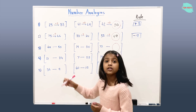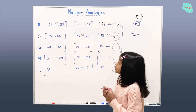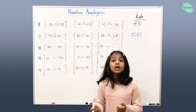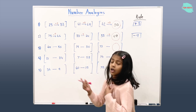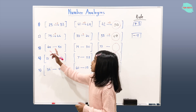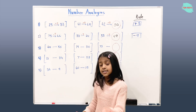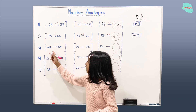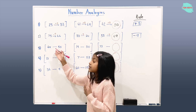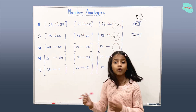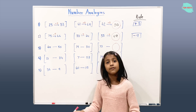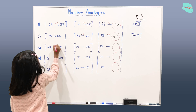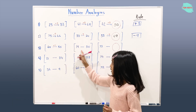Let's solve the third example. We have three groups that are different, and they're also number analogies. So let's solve it. Here if you see, it's increasing — it's going from 44 to 55. So 44 plus something gives us 55: 44 plus 11. That's correct, right?